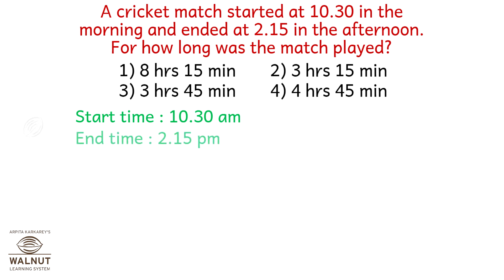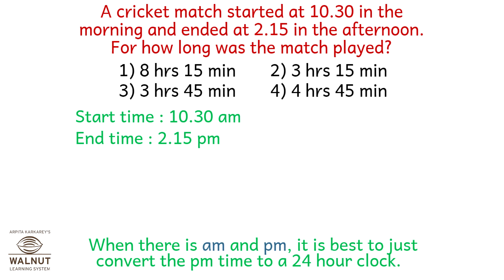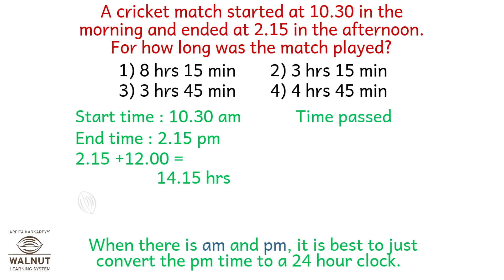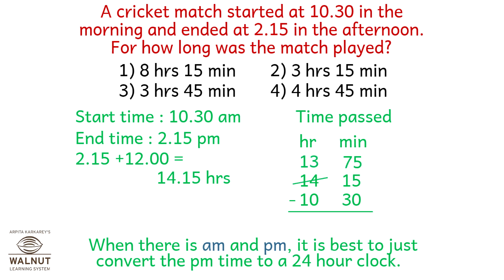The start time is 10.30 a.m. and the end time is 2.15 p.m. When there is a.m. and p.m., it is best to convert the p.m. time to a 24-hour clock. So 2.15 plus 12 is 14.15 hours. The time passed is 3 hours and 45 minutes, which is option number 3.